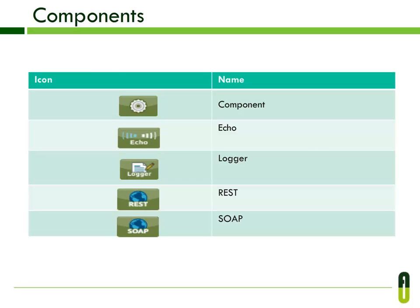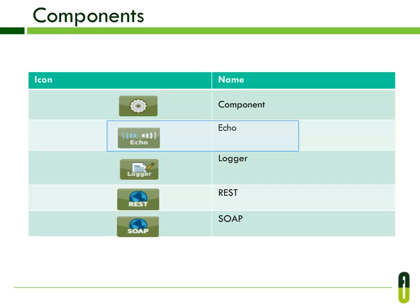Here you can see the different types of components. The Component is used to invoke a Java component — it specifies a Java class as the service component or configures a reference to an implementation in a container such as Spring. The Echo component echoes a message payload to the console. The Logger component performs logging using an expression that determines what should be logged depending on the logging level.